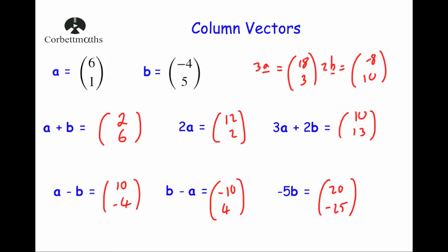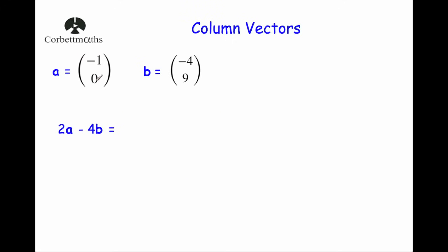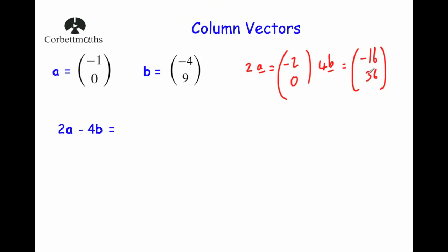One last example: a = (-1, 0) and b = (-4, 9). Find 2a − 4b. First, 2a = (-2, 0). Then 4b = (-16, 36), since 4 × (−4) = −16 and 4 × 9 = 36. Now 2a − 4b: (−2 − (−16), 0 − 36) = (−2 + 16, −36) = (14, −36).